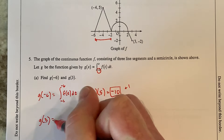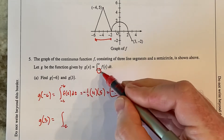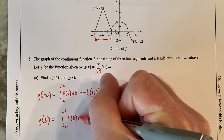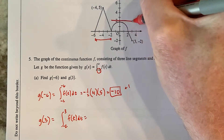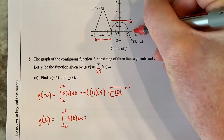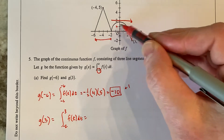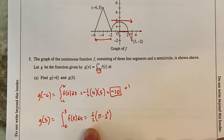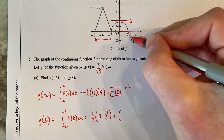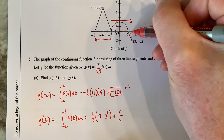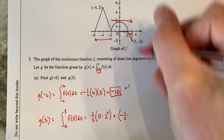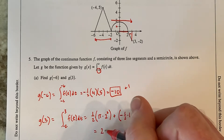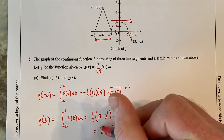For G of 3: going from negative 2 to positive 3, that's heading right, so area above is positive and area below is negative. The semicircle above is positive: one half times pi times radius 2 squared equals 2 pi. Then subtract the triangle below: one half times base 1 times height 2, which is 1. So G of 3 equals 2 pi minus 1. That's worth a point.